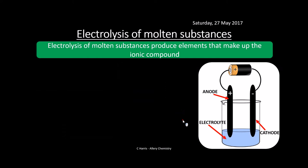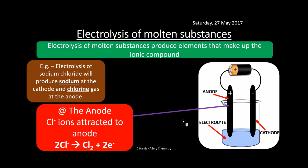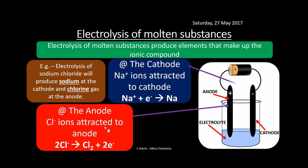Electrolysis of molten substances is relatively straightforward — it produces the elements that make up the ionic compound. For example, molten sodium chloride produces sodium at the cathode and chlorine gas at the anode. At the anode, 2Cl⁻ → Cl₂ + 2e⁻. At the cathode, Na⁺ + e⁻ → Na, so sodium metal collects there. This only applies when the substance is molten.